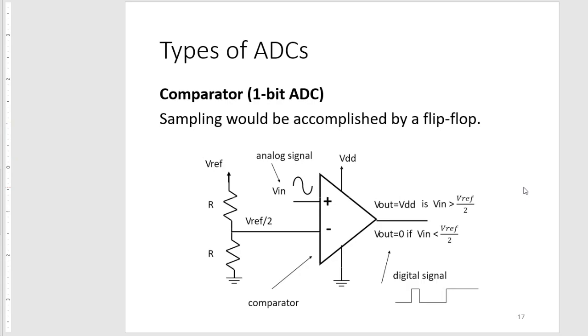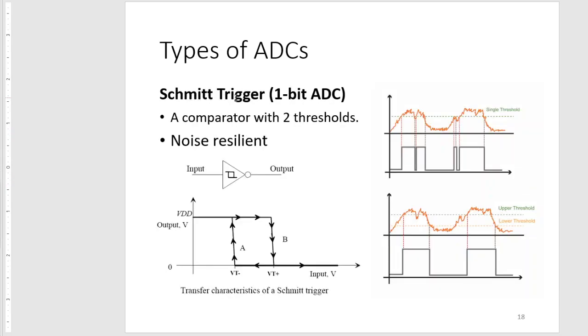A more improved version of the comparator is the Schmitt trigger. These are harder to make but basically a comparator with two thresholds. When a signal is noisy, it has a chance to flip the output of our comparator. But if we have two thresholds depending on its current state, we can bypass the noise. The transfer characteristic for a normal comparator is one straight line, but because of the Schmitt trigger, depending on its current output, it can modify its threshold value.